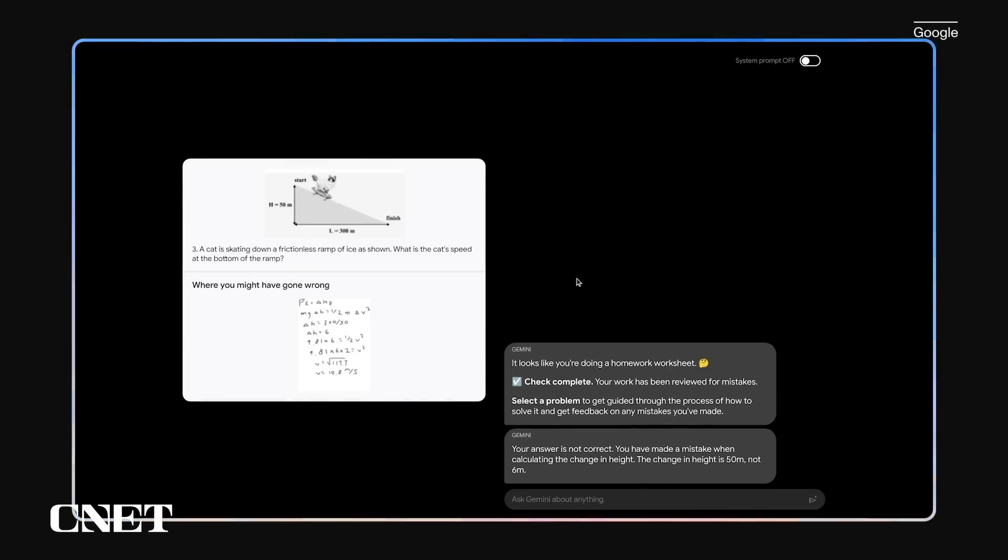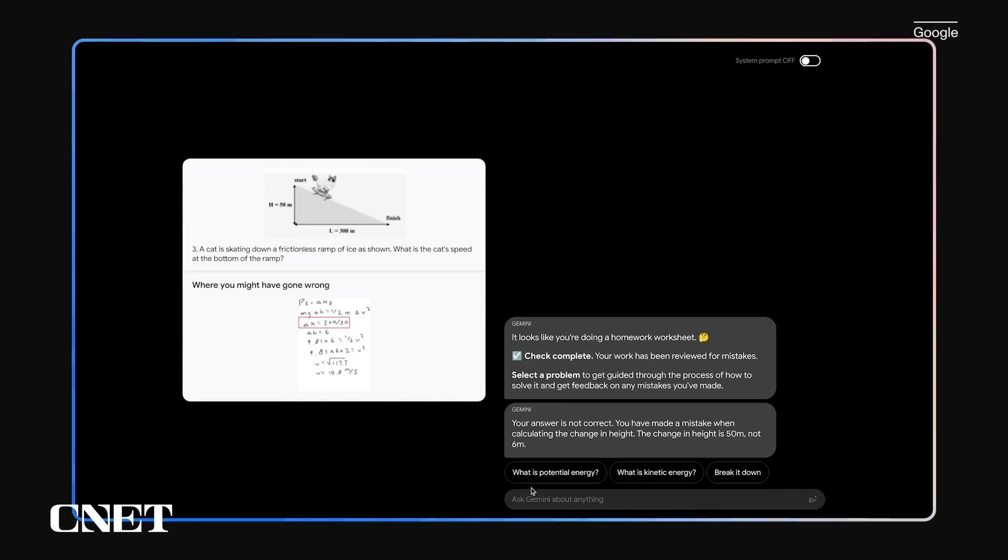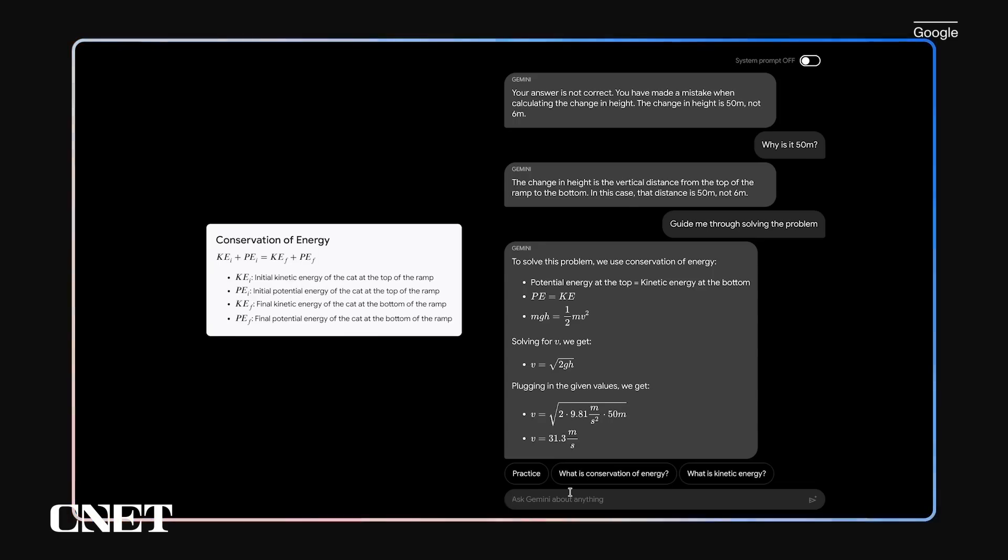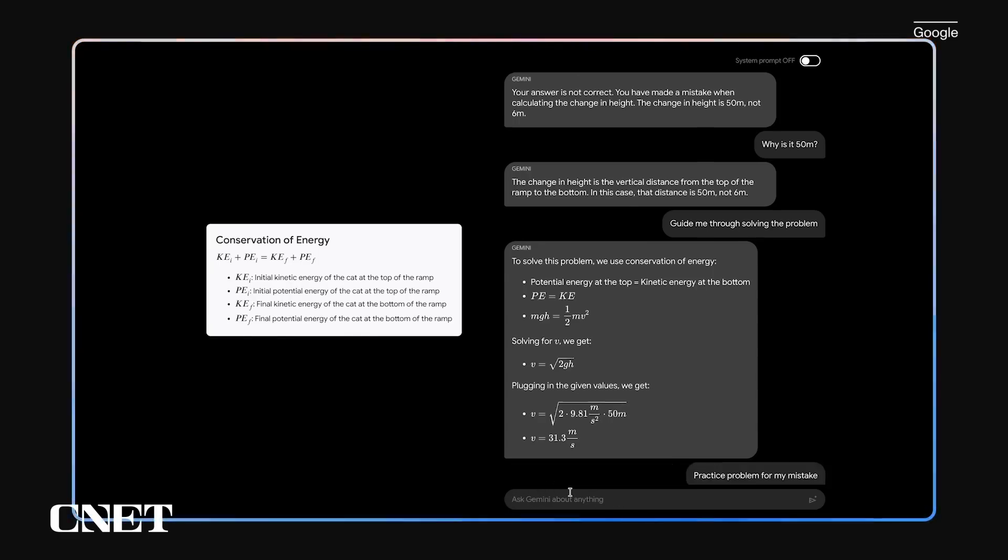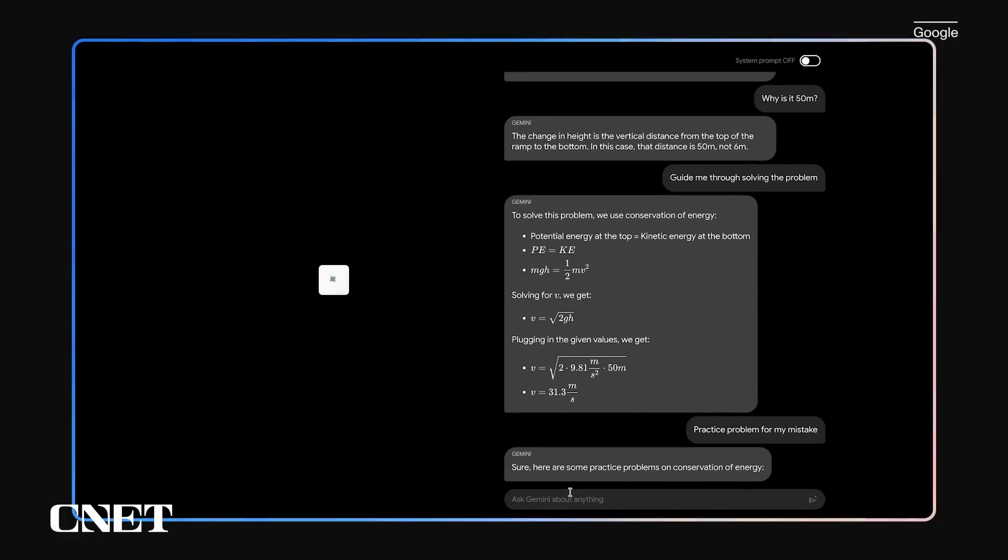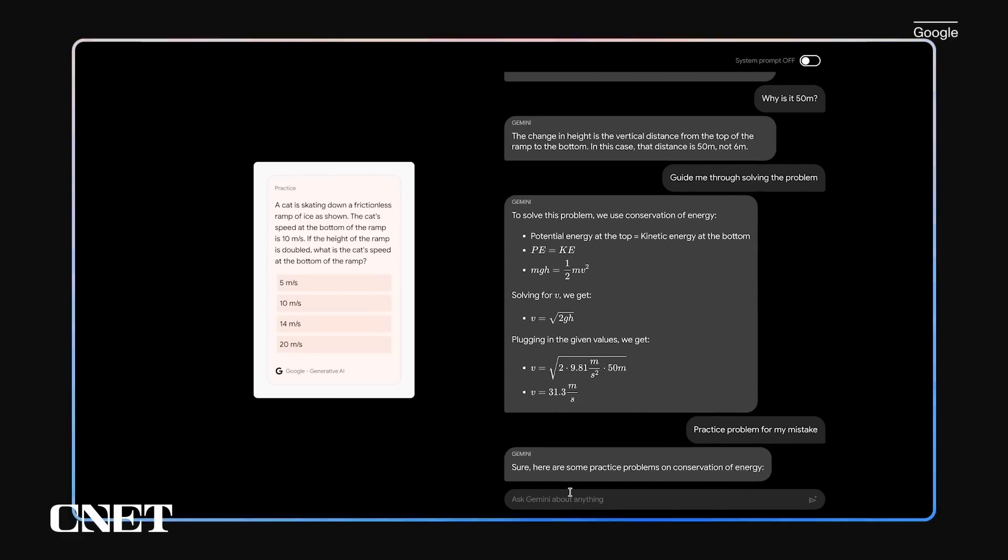Some of the examples they showed were handling a physics homework problem. It had a little sketch drawing and some equations and some handwritten work. And so the Gemini AI was able to understand the picture, understand the handwritten equations, figure out what the error was in the student's trying to attempt to solve the problem and then provide some answers on here's where you went wrong.